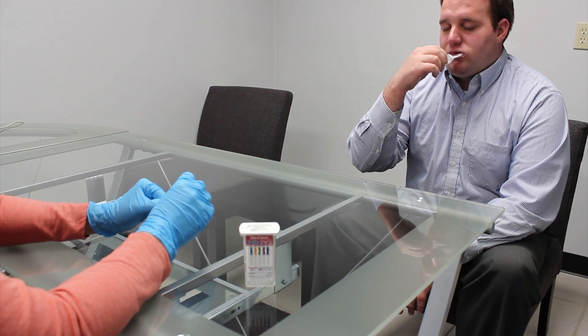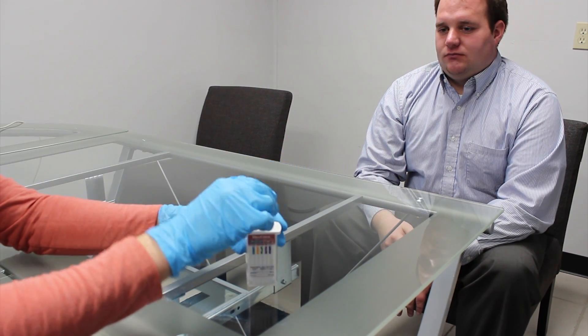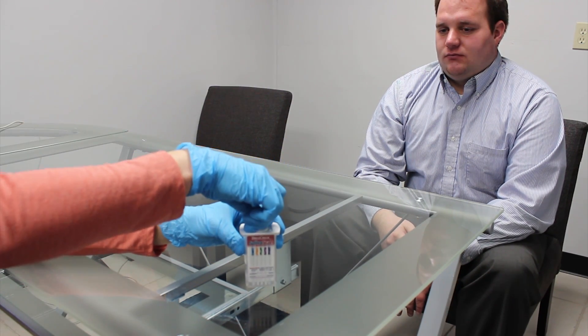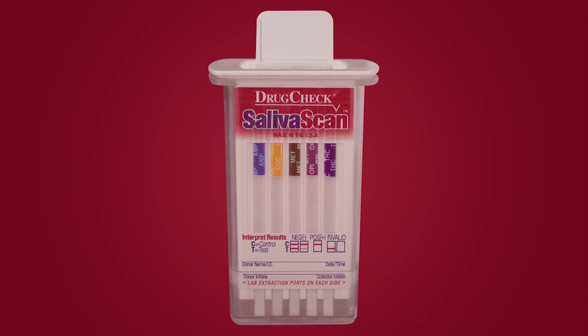Remove the collection swab from the donor's mouth and, without touching the sponge, insert it sponge-first into the screening device, pushing until the locking flange locks in place in the bottom of the device. Once the collection swab locks in place, the device is airtight, tamper-evident, and ready to be disposed of or sent to a laboratory for confirmation for a presumptive positive result.